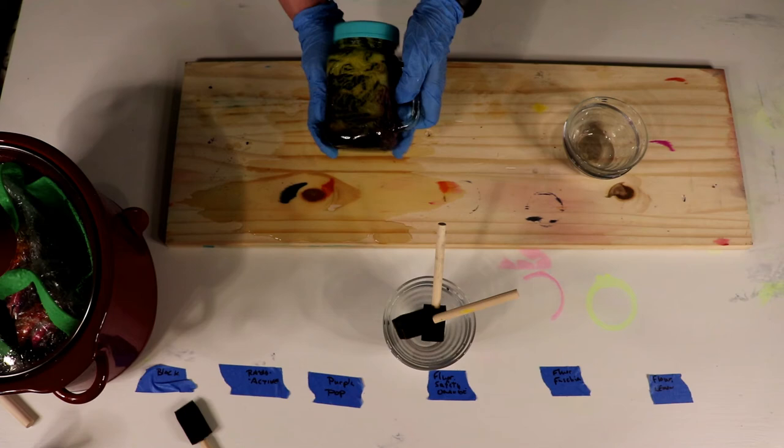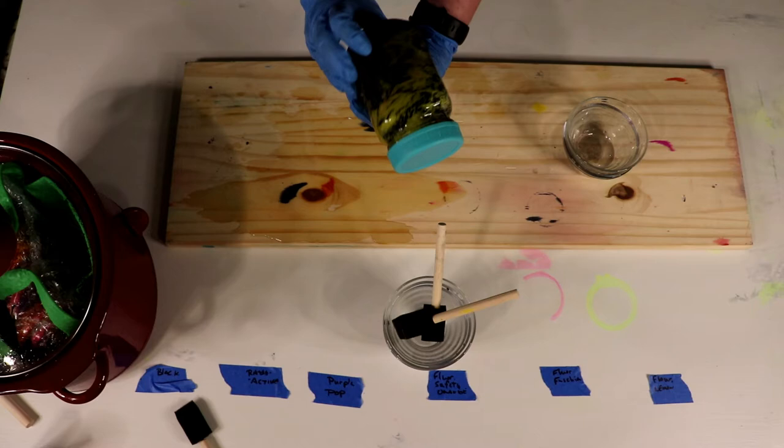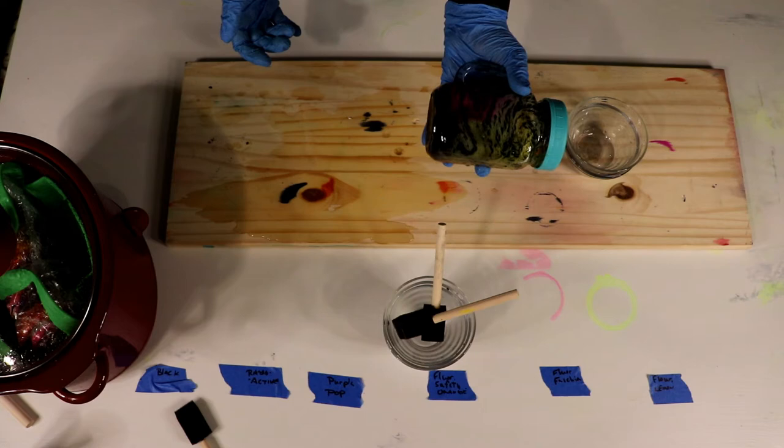And I want to try to get enough water in there to get that wet. Spread the color around. That's all the water that we're going to be able to fit in that jar. Now we're just going to let this sit for a while. A couple of days at least. Let that dye move around. And then we'll put it in the crock pot to heat set it.